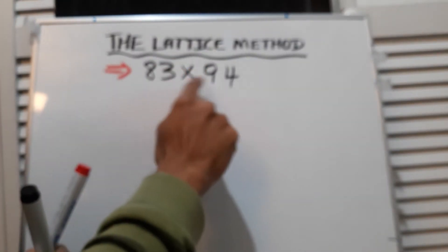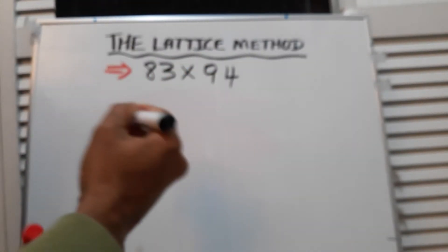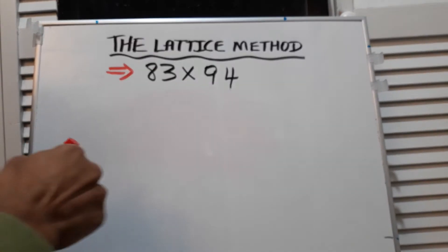It's a two-digit times a two-digit number, so all we need to do here is make a two by two box.